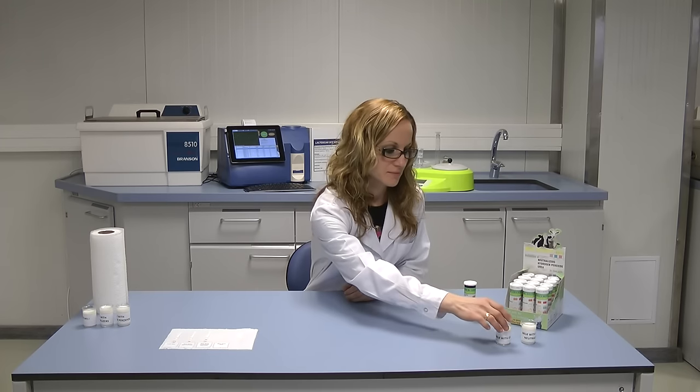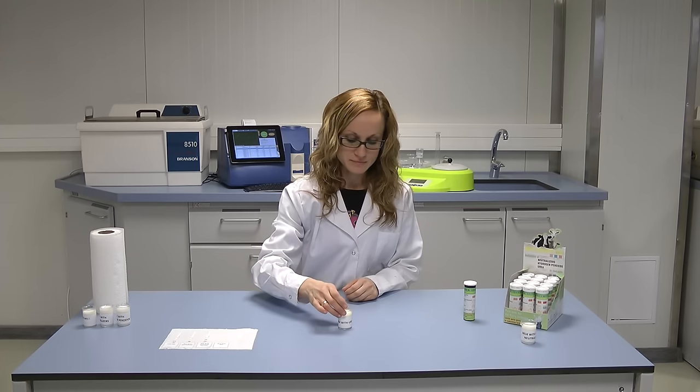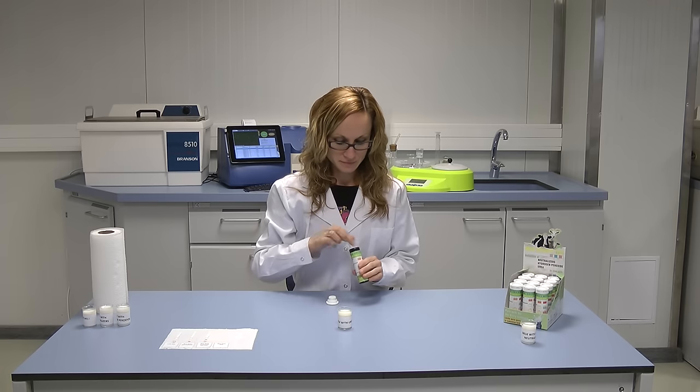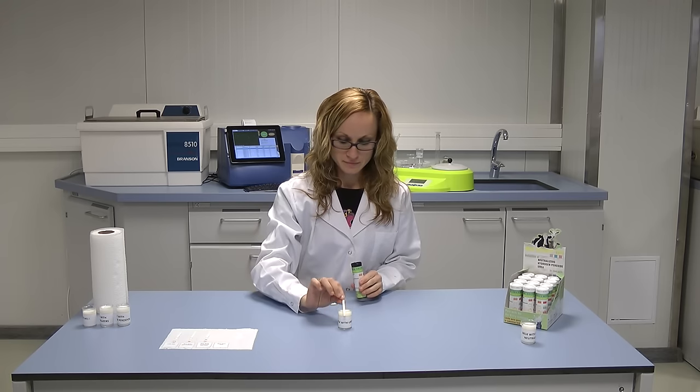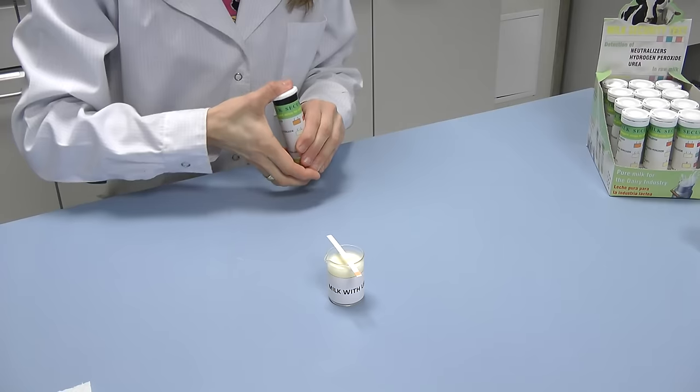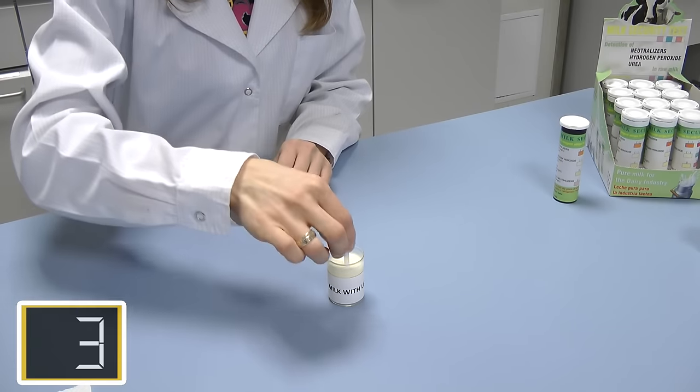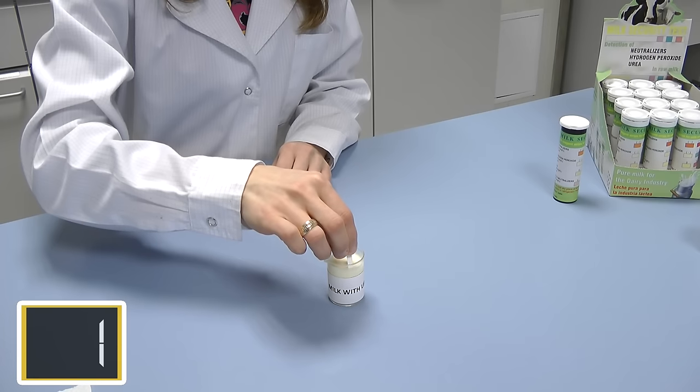Fourth sample is milk adulterated with urea. Urea is generally added in milk for increasing solid non-fat value. It has been proven that urea added to milk at a higher concentration reduces the acidity of the hydrogen ions and increases the pH of the milk.